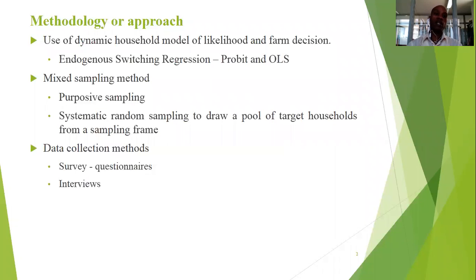Therefore, this study adopted a dynamic household model of likelihood-based farm decision to attain the general effect. A digital switching regression was adopted. A mixed sampling method was used, whereby purposive and systematic sampling were used to draw a pool of target households from a sampling frame. Data was collected through surveys and interviews.